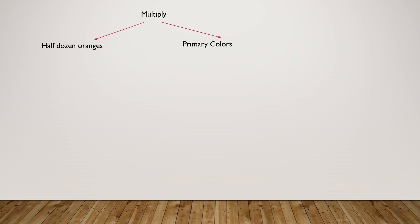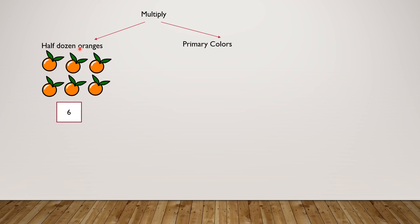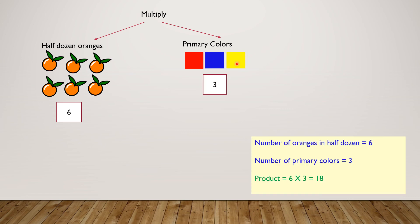Let's review this. Multiply half a dozen oranges by how many primary colors are there. How many are half a dozen of oranges? Right, there are six for half a dozen. How many primary colors are there? The number of oranges in half a dozen equals six. Number of primary colors equals three. Product equals six times three, which is eighteen.